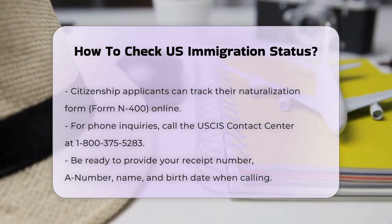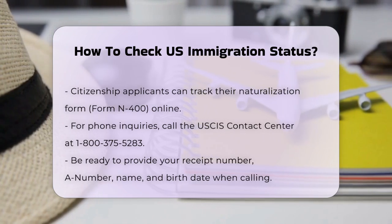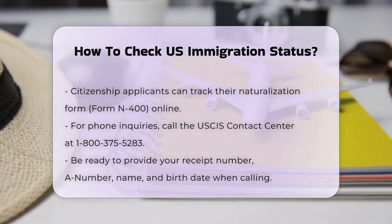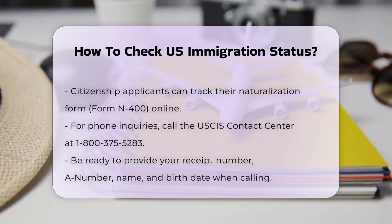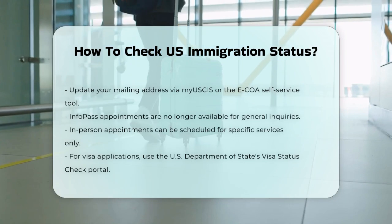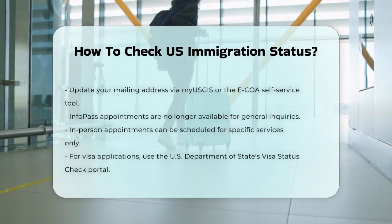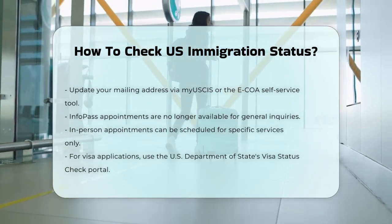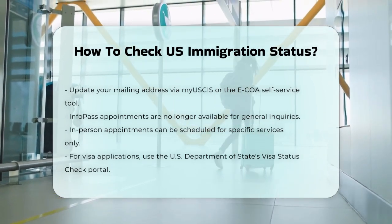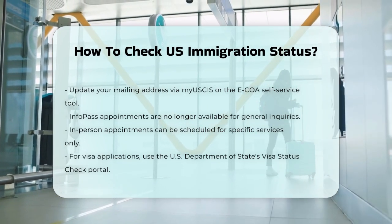You can also update your mailing address through your My USCIS account or by using the Enterprise Change of Address eCoA self-service tool, which ensures you receive all official notifications from USCIS. For those who need to check their status in person, InfoPass appointments are no longer available for general inquiries. However, USCIS will schedule in-person appointments for specific services that cannot be provided by phone or email, such as emergency travel documents.